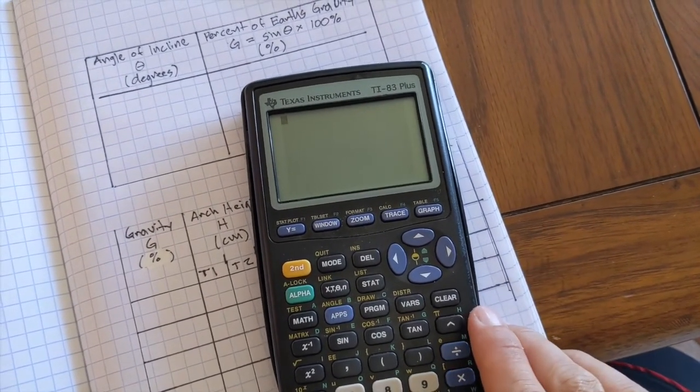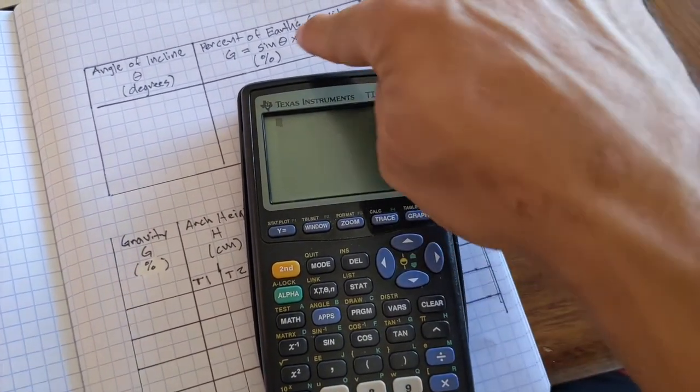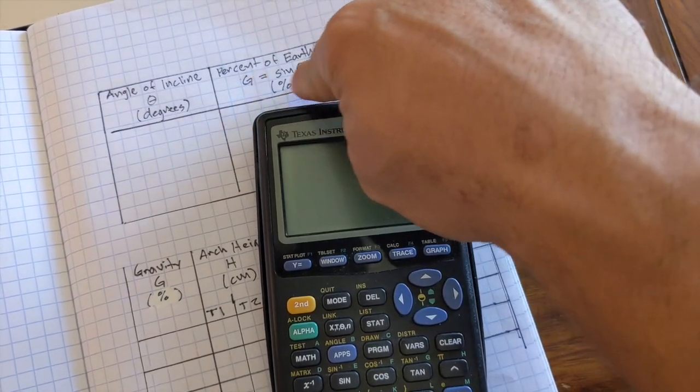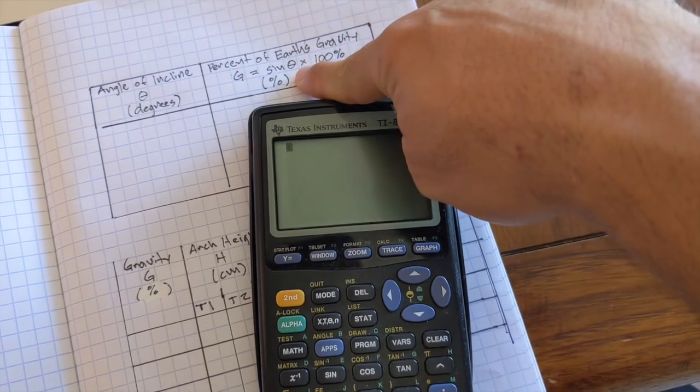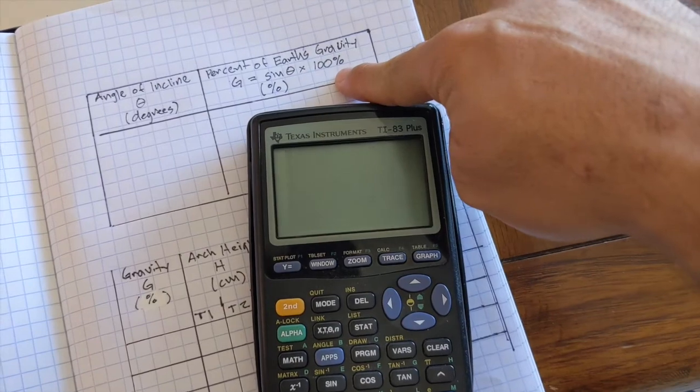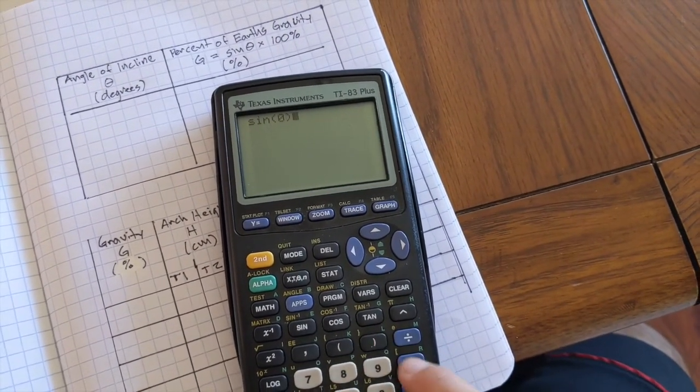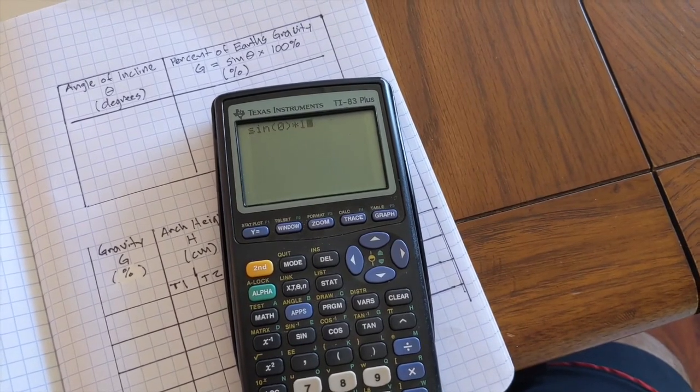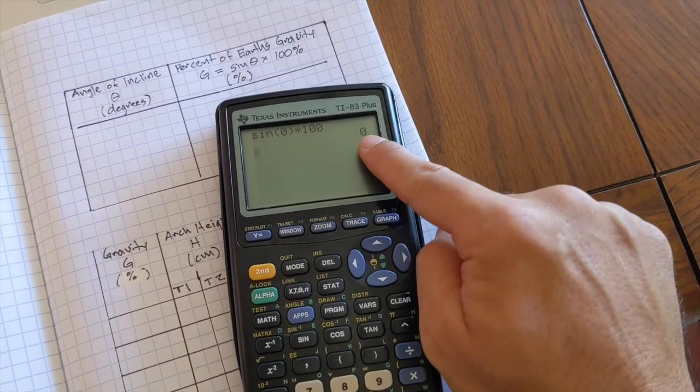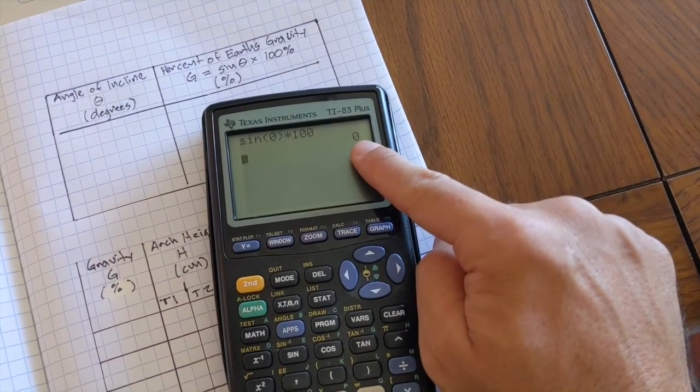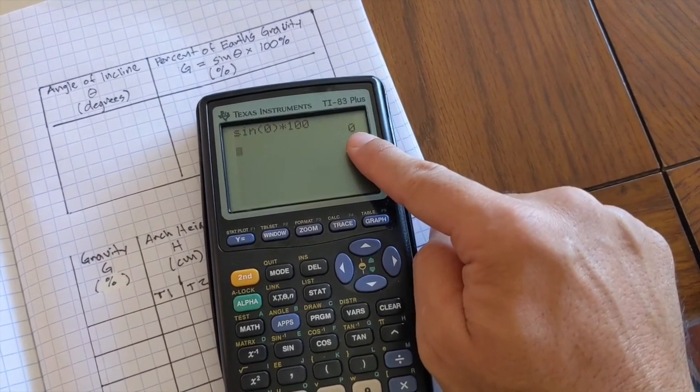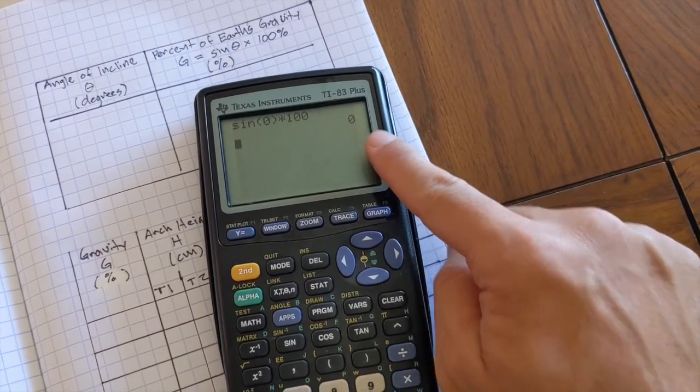Next, we're going to go through an example calculation. Gravity percentage is going to be sine theta, which is the angle, times 100%. Here is an example. If I have sine zero, this should make sense, times 100%, then it's going to be zero percent of the gravity because my cake pan is flat on the surface, representing no gravity.